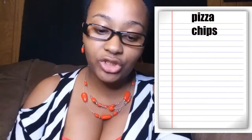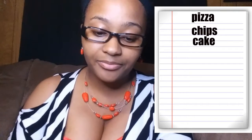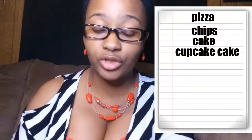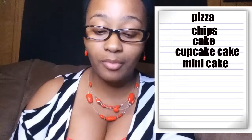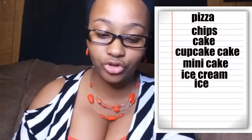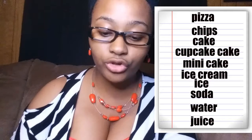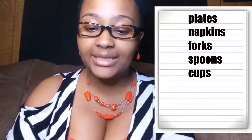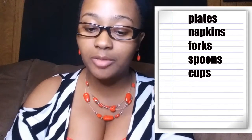Under food I'm putting everything we're eating, everything we're drinking, and the things that come with food like plates, cups, and stuff like that. I have: pizza, chips, a cupcake cake for the kids, a mini cake for Mason, ice cream, ice for the drinks, soda, water, juice, plates, napkins, forks, spoons, cups, and paper towels. That's what's going to work for my party — you can alter it any kind of way you want.